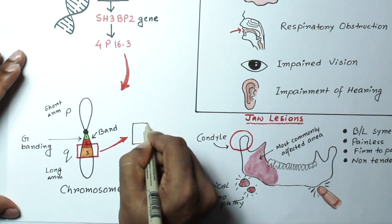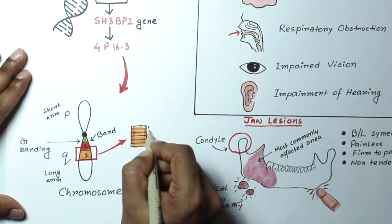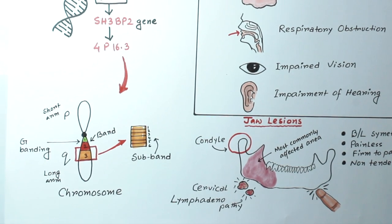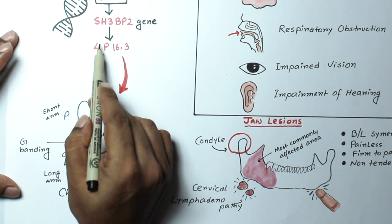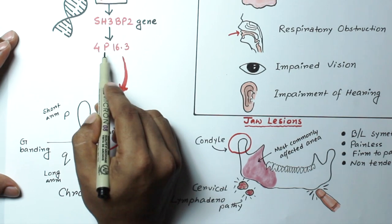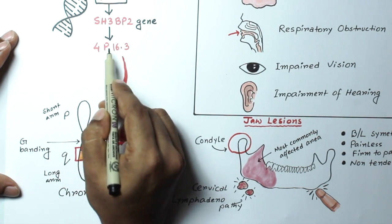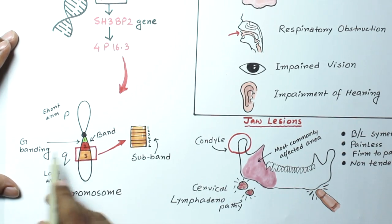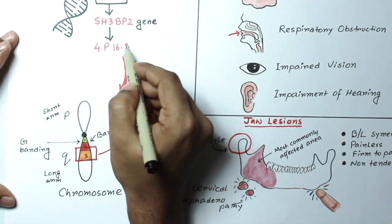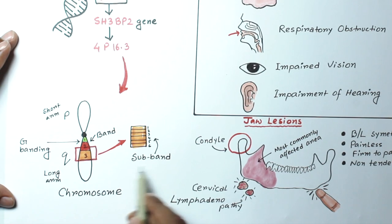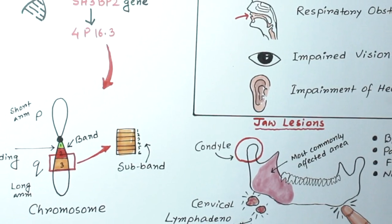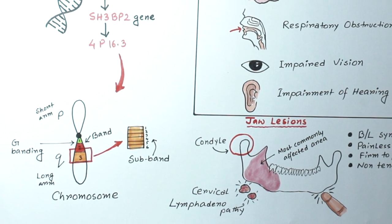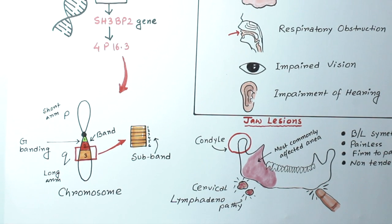Now every band can be divided into more parts, called subbands. So the very first number depicts the chromosome number, p stands for short arm, the number before the point is the band number, and the number after the point is the subband number. So the exact location of the gene is on the short arm of chromosome 4, on the 16th band, and third subband area.